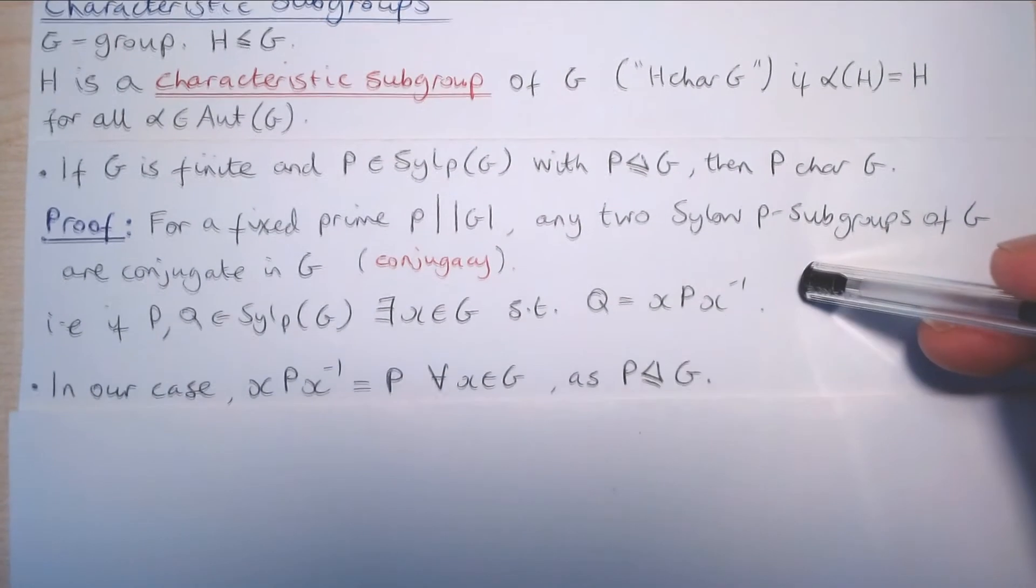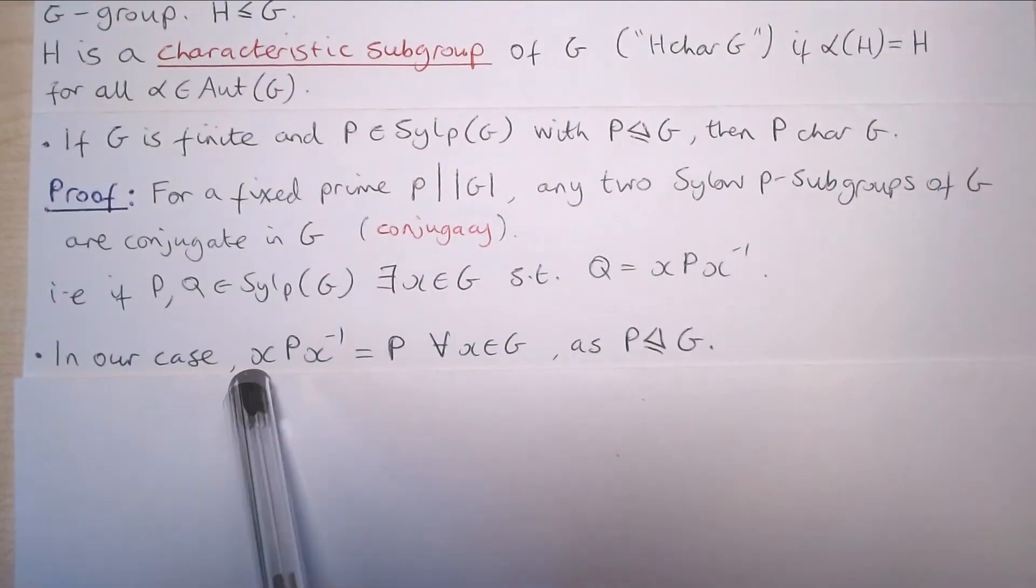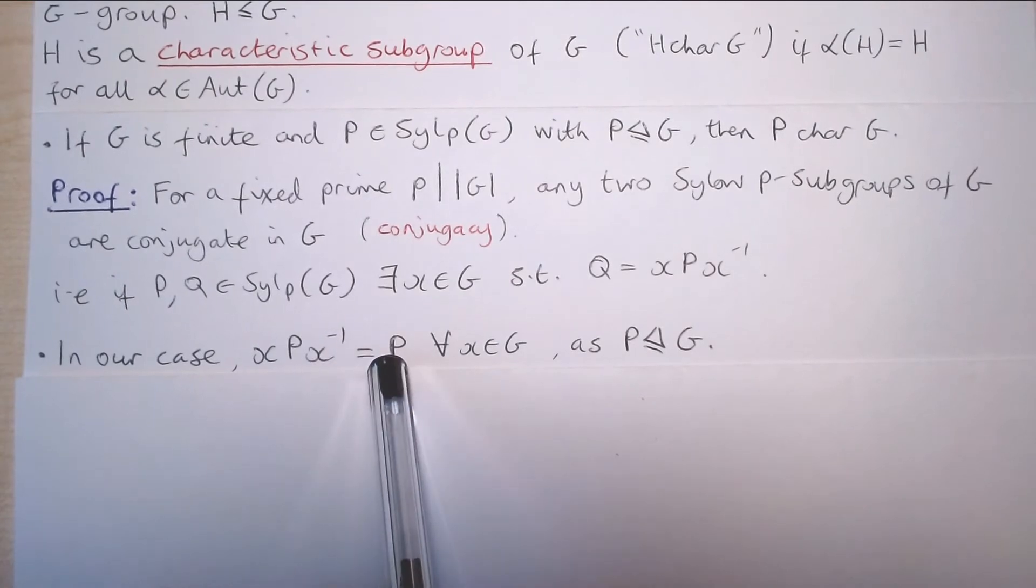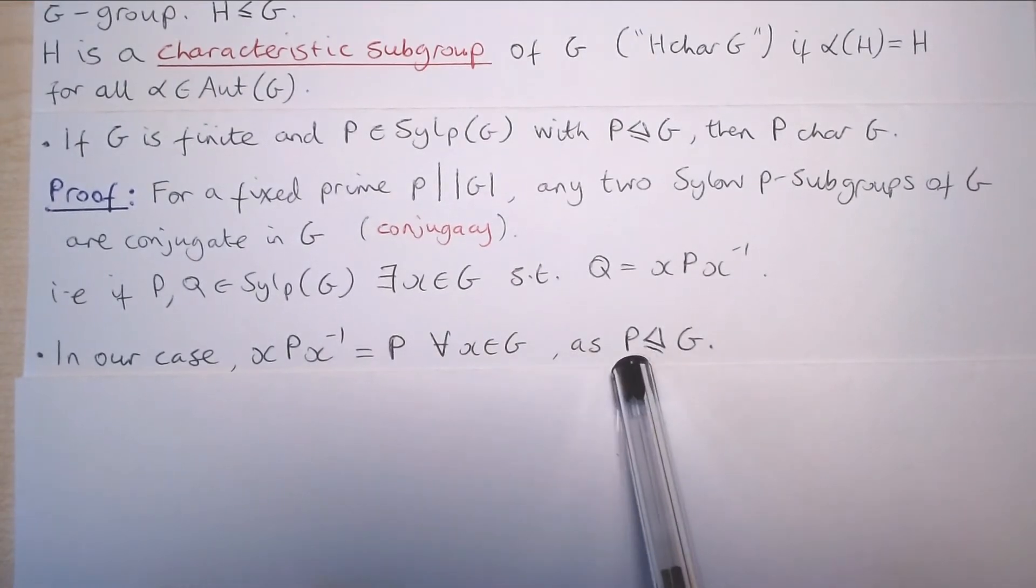But now note that in our case, XPX^(-1) equals P for all elements X of our group, as P is normal in G. This is the definition of P being a normal subgroup of G.